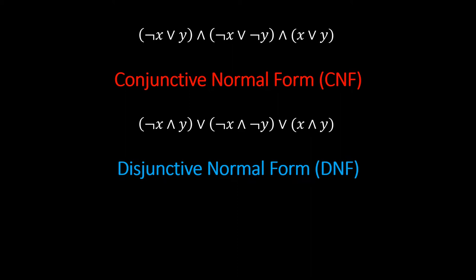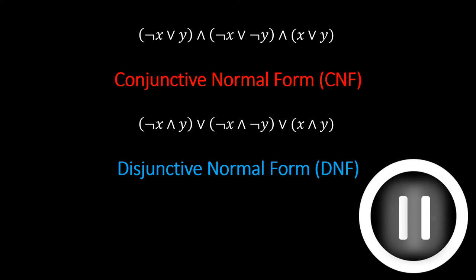For a hard challenge, pause the video right now to see if you can spot which is which. For DNF formulas, finding a satisfying assignment amounts to finding a single and clause that can be satisfied, which requires that no variable and its negation appear together in the same clause. This can all be checked in linear time.